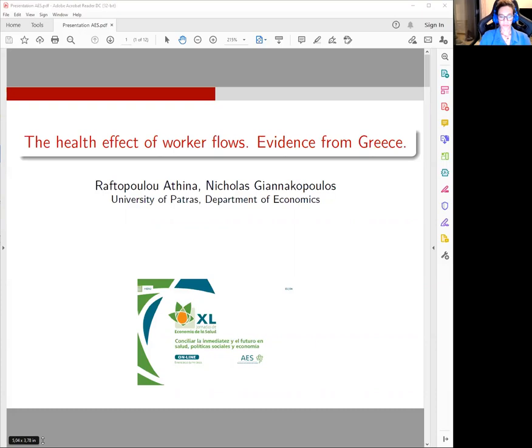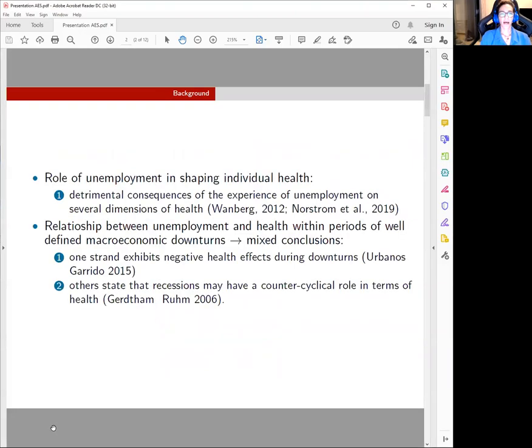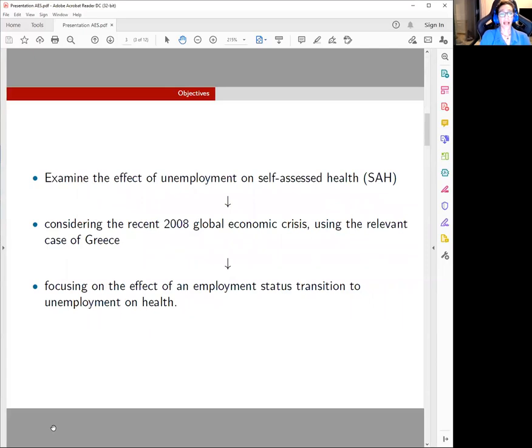There is a huge literature on the role of unemployment in shaping individual health, while there are several studies that focus on observing this relationship within periods of well-defined macroeconomic downturns. With a view to shed light on this relationship, we estimate the effect of unemployment on self-assessed health using the relevant case of Greece, which was one of the hardest hit countries during the Great Recession, mainly focusing on worker transitions to unemployment and their effect on health.